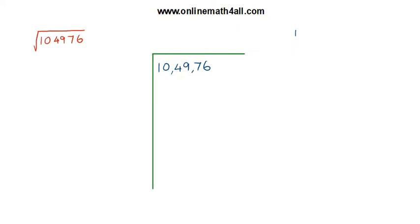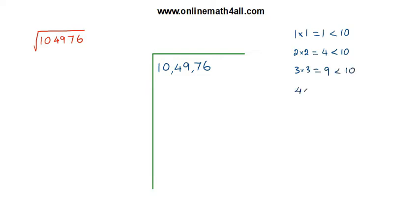Now what I need to do is I have to multiply a number by itself, and the result has to be equal to ten or less than ten. So we can try: one times one equals one, which is less than ten. Two times two equals four, which is also less than ten. Three times three equals nine, which is also less than ten. But four times four equals sixteen, which is greater than ten, so we cannot try four times four.